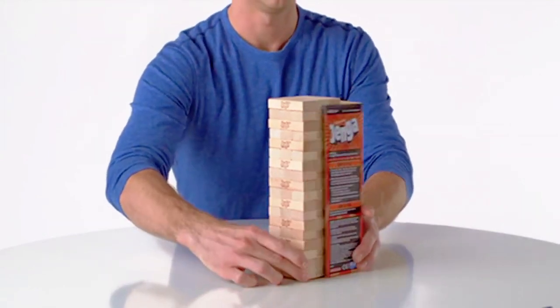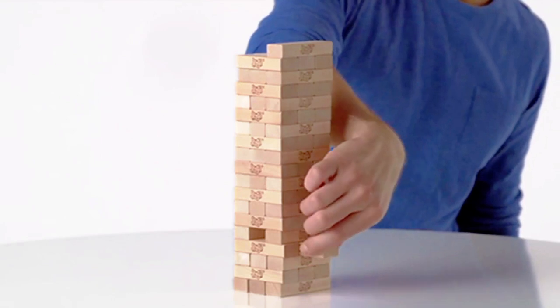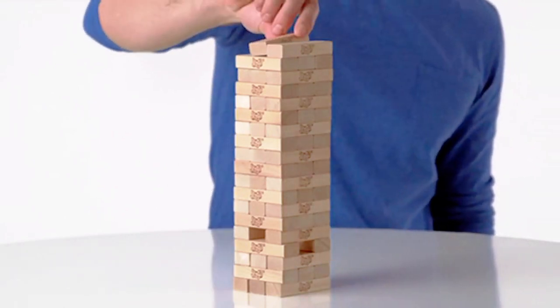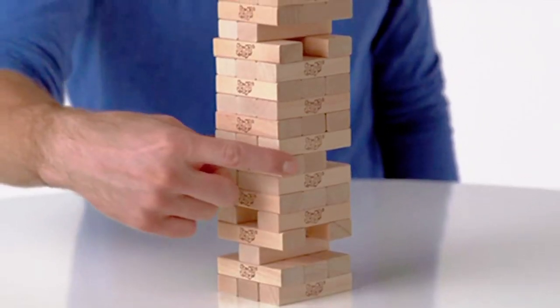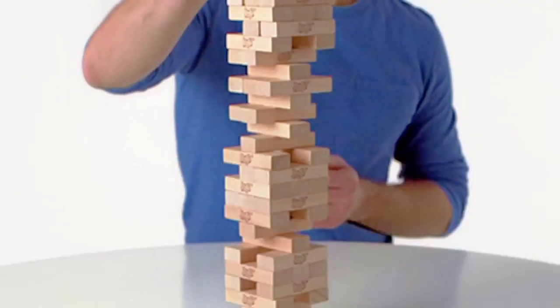Using only one hand, carefully remove a block from anywhere beneath the highest completed level, and then stack it on top. Keep taking turns stacking blocks as the tower starts to rock back and forth. Just don't knock it over.